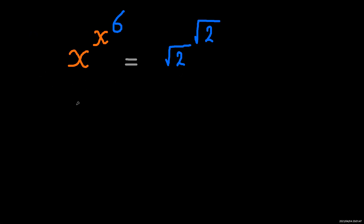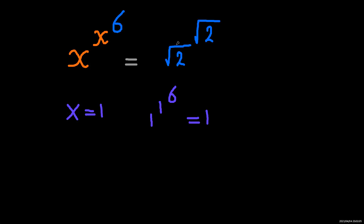Let's assume x equals 1. The left-hand side will be 1 to the power of 1 to the power of 6, which would be 1. That's smaller than the right-hand side, because 2 times the square root of 2 — this is going to be 1.4 to the power of 1.4 — which is definitely more than 1.